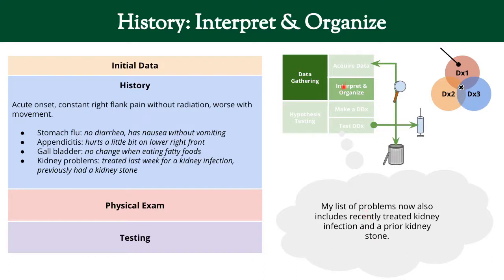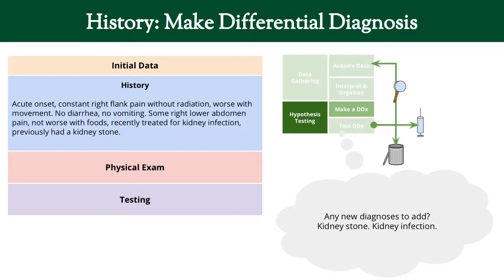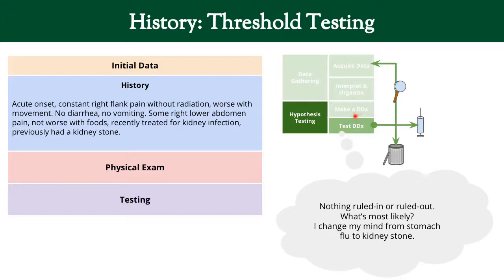We've got to interpret and organize. In addition to those things from before, we also have a recently treated kidney infection and a prior kidney stone on our problem list. For hypothesis testing, we add kidney stone and kidney infection to our differential alongside stomach flu, appendicitis, and gallbladder. We don't have enough to rule in or rule out something yet, but given the kidney history and right-sided pain, we're going to change our most probable diagnosis to kidney stones. Let's keep going.